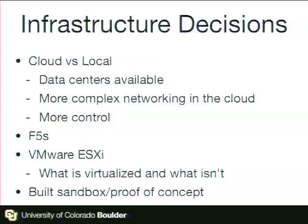We're a big university. We have data centers — we've been running data centers since the 70s, so the facilities were in place. The other thing that really drove that decision is that, as Joe pointed out, we had 700 top-level domain sites that needed to be maintained. Trying to figure out the networking for that in the cloud was beyond our ability and comprehension. So we decided to do it locally. We also needed to decide how we were going to do load balancing and web traffic management — we picked F5.